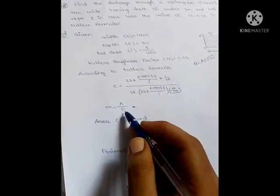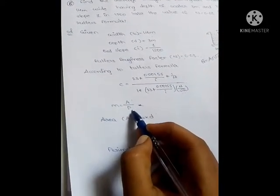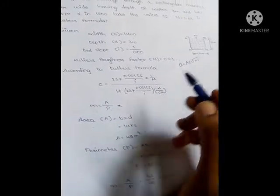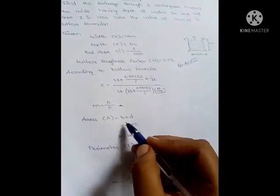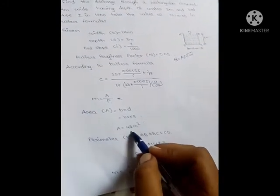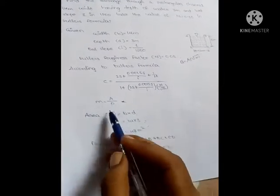Hydraulic mean depth formula: area by perimeter. For rectangular section, area equals breadth into depth, so 14 into 3 which equals 42 meter square.